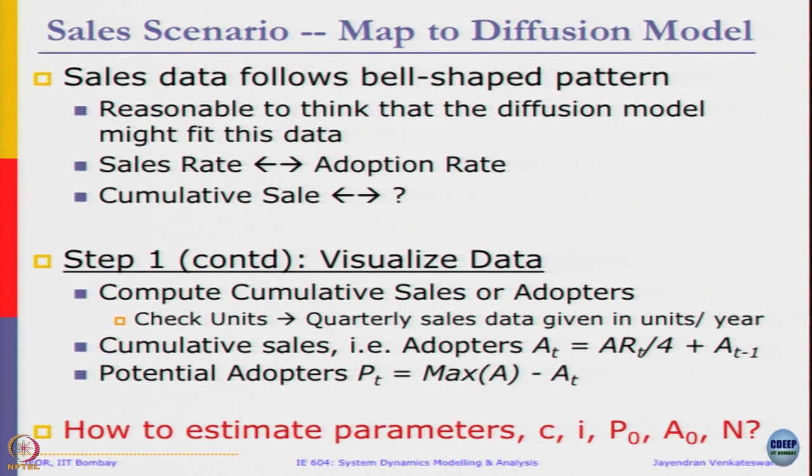The first step we are going to do is we have the sales data, that is the only data we have. Based on that, let us try to figure out what is the cumulative sales data, plot it and see what is the curve. Then we will figure out how to estimate the parameters: C, i, initial value of potential adopters, initial value of adopters, and the total population N. Let us do that.